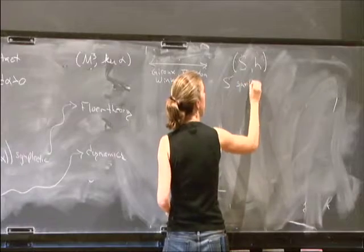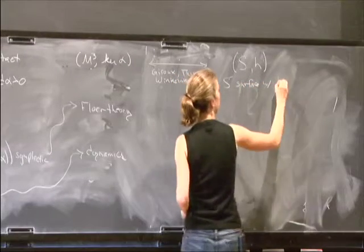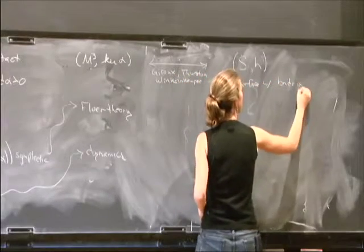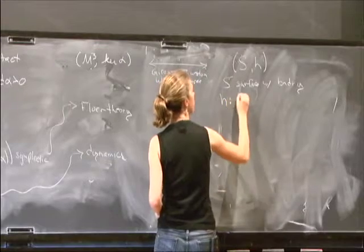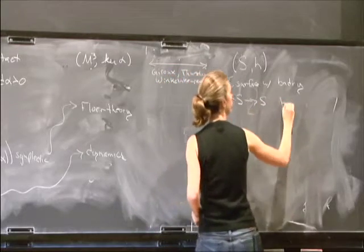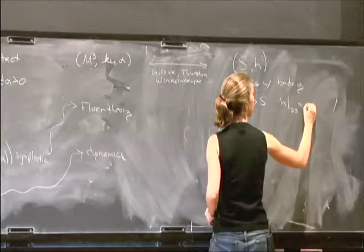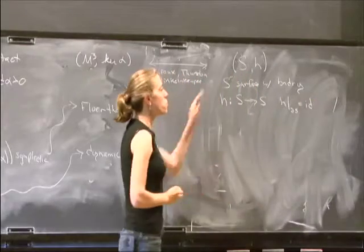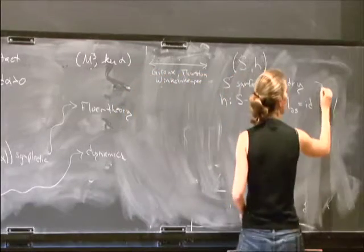S is a surface with boundary. And h is a homeomorphism of the surface, which restricts on the boundary of the surface to the identity. And this together is called an open book.